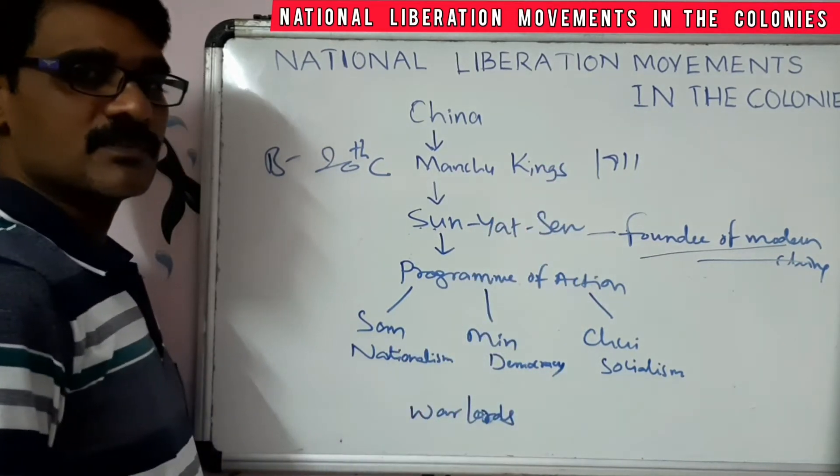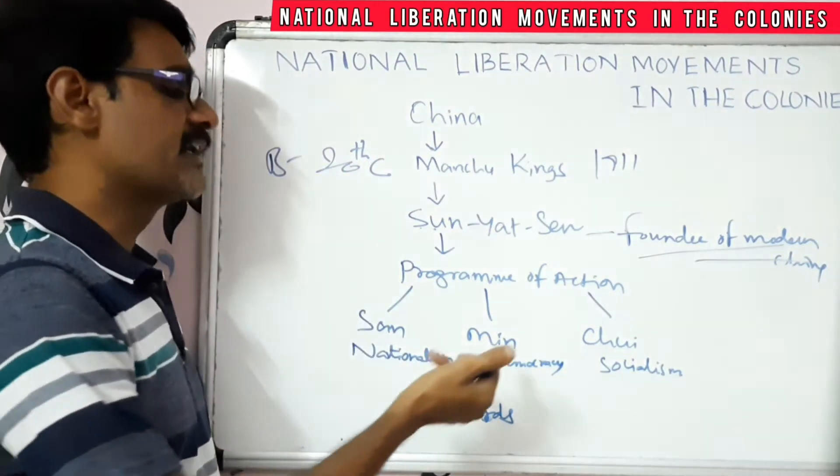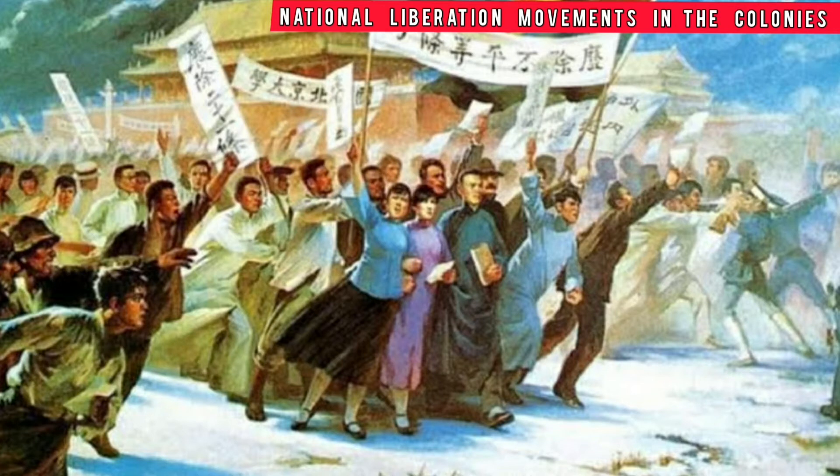In 1911, after the overthrow of the Manchu kings, China was declared a republic. The republic government was led by Sun Yat-sen, but he was unable to consolidate power because of the warlords. The warlords were regional army powers, and the country was under the control of these local regional warlords. After this period, he tried to overcome the warlords, and after the First World War, in 1919, the May 4th movement took place in China.